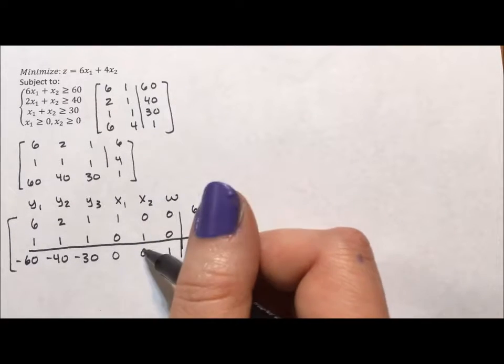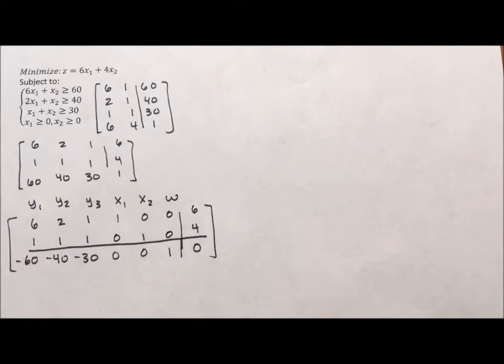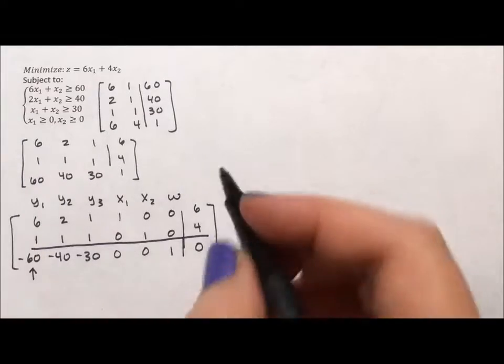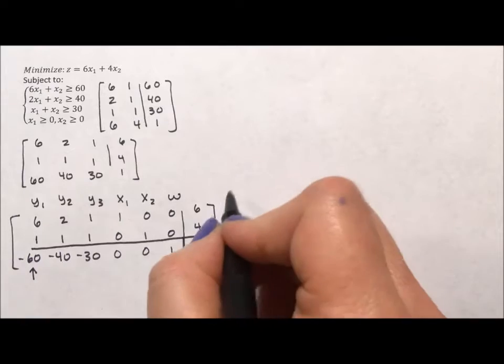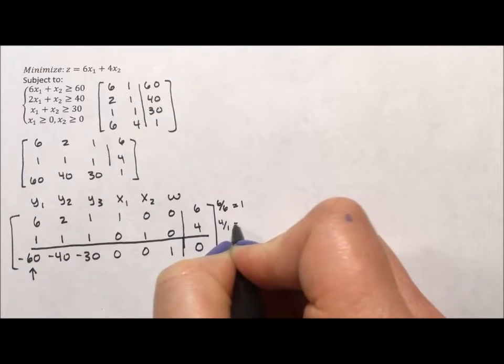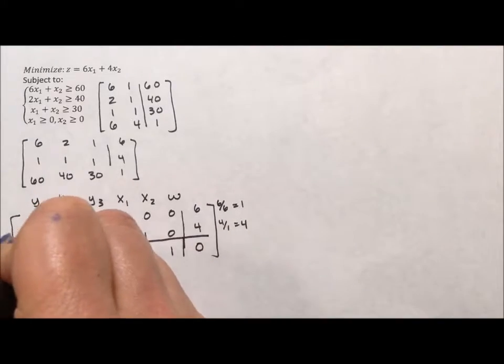You always start off your simplex method with a 0 in the hole. We always start with a 0 as our starting off number because what we're trying to do is maximize. And we always start with the idea of the origin, 0, 0, which is 0. x sub 1 is 0, x sub 2 is 0. If they're both 0, z is equal to 0. Okay, so simplex method, how it works. You look at the numbers below the line. You try to find the biggest number below the line, which in this case is this negative 60.